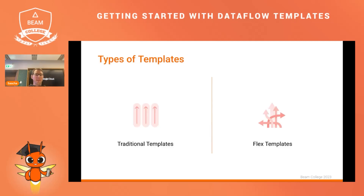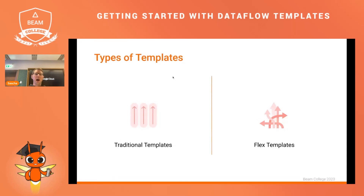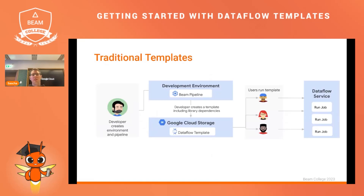There are two types of templates: traditional templates and flex templates. We will talk about them individually. Traditional templates have a development flow that is a little different from flex templates. A developer creates a pipeline, and once satisfied, creates a template containing all the libraries and dependencies necessary and stores the template on an object store like Cloud Storage. People are then able to refer to the template, specify their own parameters, and start the pipelines individually.